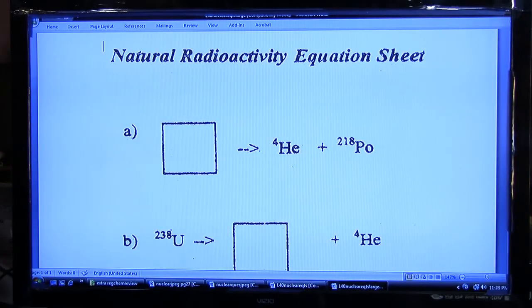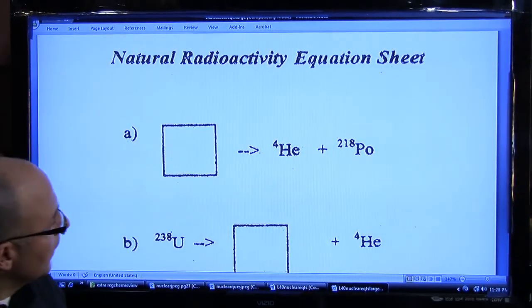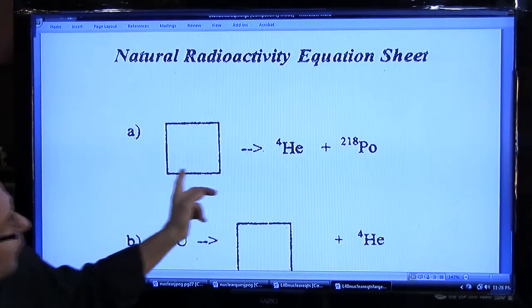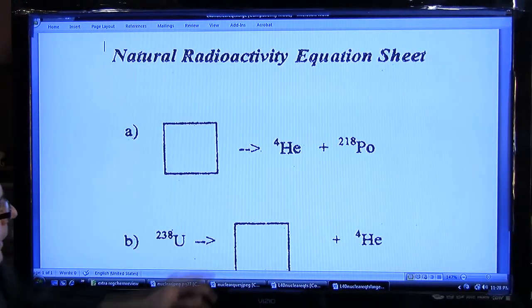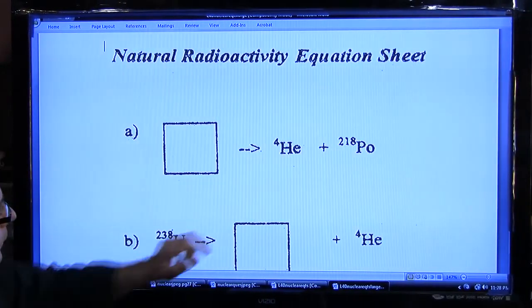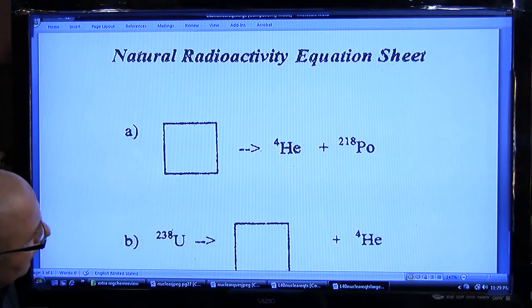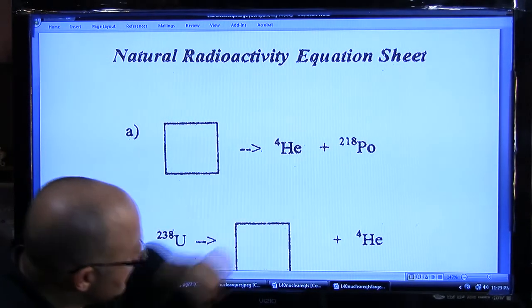So, in this case here, the unknown is what formed, what emitted this alpha particle. You might recognize that notation for an alpha particle and formed this new element.